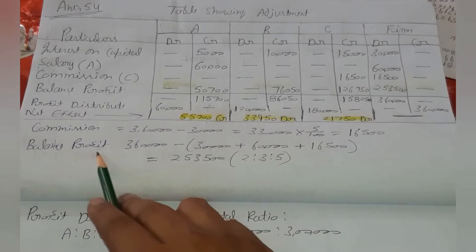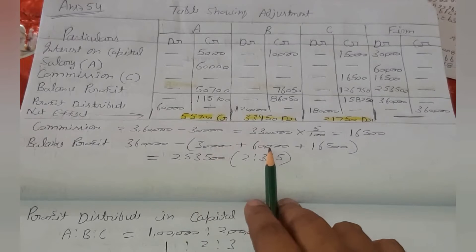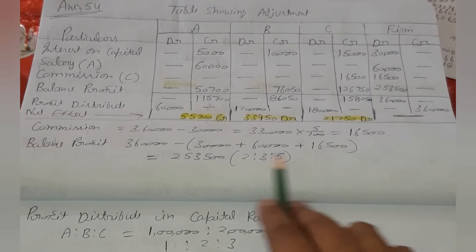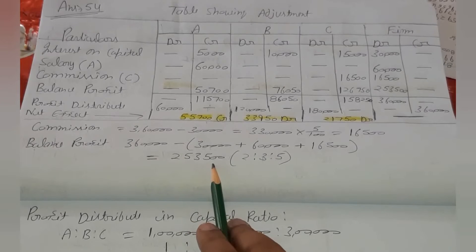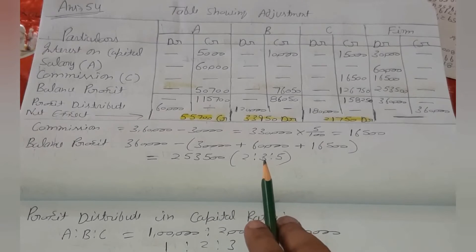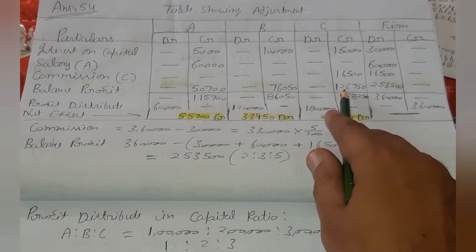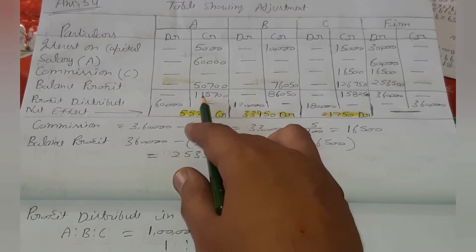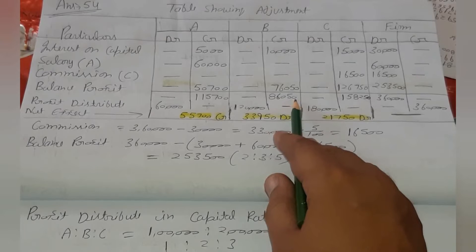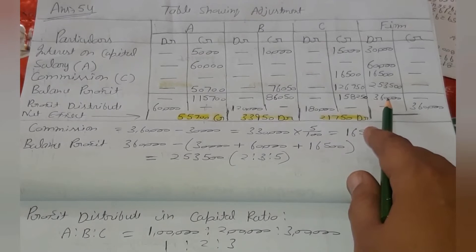इसके बाद देखना है कि balance profit कितना बचा। Total profit 3,60,000 था, उसमें से interest on capital (30,000), salary of A (60,000), और commission of C (16,500) minus करने के बाद बचता है 2,53,500। इसको 2:3:5 के ratio में distribute करेंगे। Balance profit आता है — A के लिए 50,700, B के लिए 76,050, C के लिए 1,26,750।